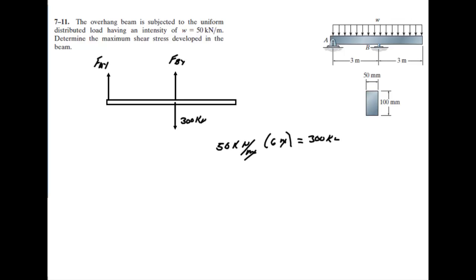You know right now FBy is 300 and this has to be zero. But if you don't know that, take a moment around A and set that equal to zero. Then I would have negative 300 times the distance, which is 3, plus FBy times the distance, which is 6, set to zero.